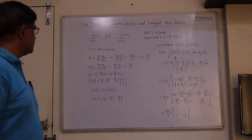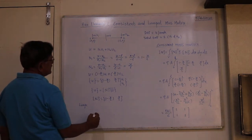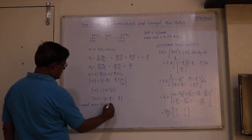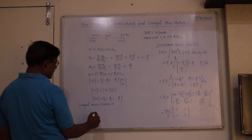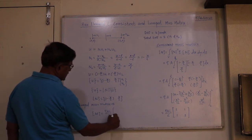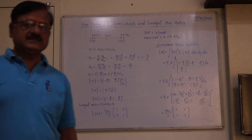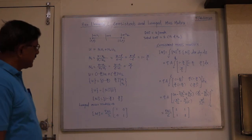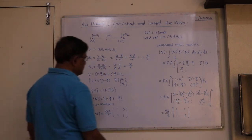Finding the lumped mass matrix is very easy. We simply lump the masses equally among the two nodes. The total mass is ρAL, so the lumped mass matrix is directly ρAL/2 times the identity matrix [1, 0; 0, 1]. This diagonal matrix is called the lumped mass matrix for the bar element.